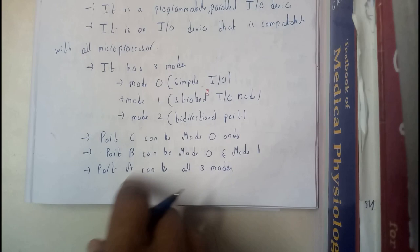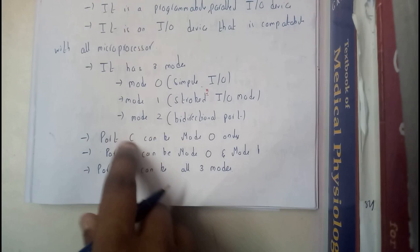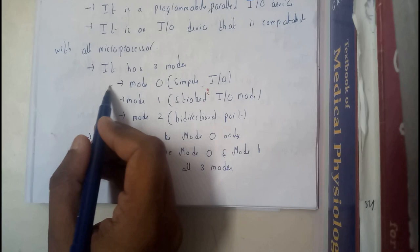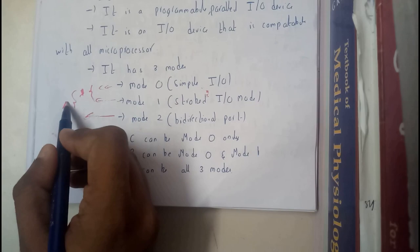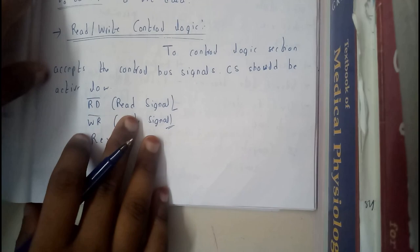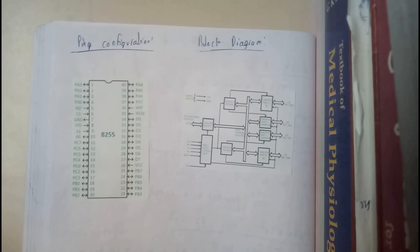Port C can be mode 0 only. So there are 3 ports also in this. Port C will be only mode 0, where port B will be mode 0 and mode 1. Port A will be the combination of all 3. So only this will be there in C, including these 2 will be there in B, including these 3 will be there in A, in that format the ports will be working. So once we are going through the diagrams, we will be having a small idea on this.